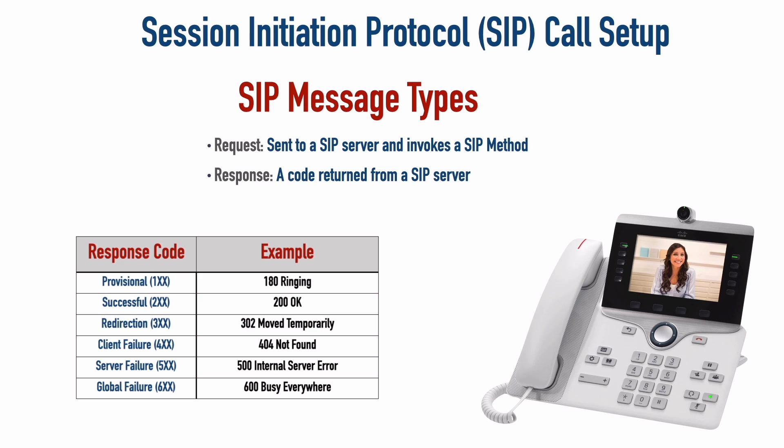The 100 series of messages indicates that the call setup is provisional — we're working on it. An example is response code 180, which indicates the phone is ringing. When setting up the call successfully, we send a 200 OK message. A 302 response code indicates the destination has temporarily moved. We've already discussed the 404 error — something wrong on the client side, like pointing to an unrecognizable or nonexistent address. A 500 error indicates an internal server error. And the 600 series represents a global failure — for example, if the primary path is busy and the backup path is also busy, a 600 response code indicates we are busy everywhere.